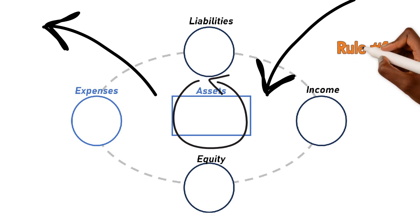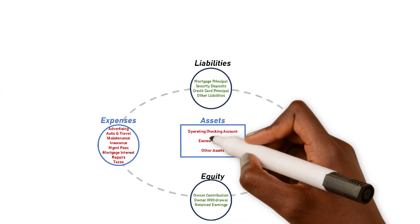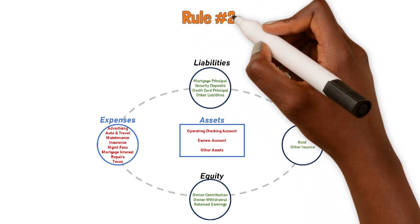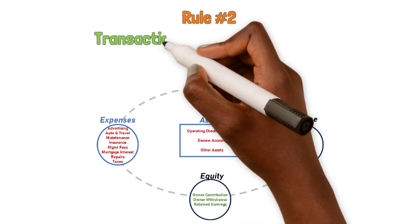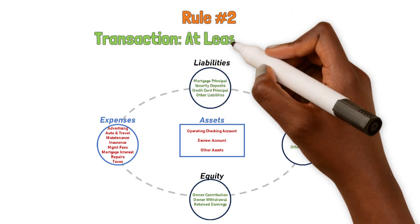So rule number one is to first determine to which of these categories each transaction belongs. We pointed out in a previous video that all transactions in your business actually flow, each with a starting point and an endpoint. That means that to enter any transaction into your bookkeeping system, you must touch at least two accounts. This is rule number two. And I say at least two accounts because it is possible to have a transaction that starts from one account and ends at two or more different accounts and vice versa.